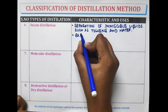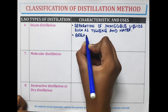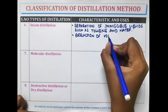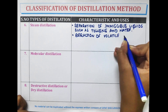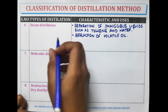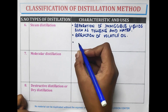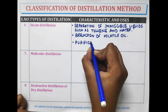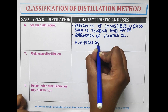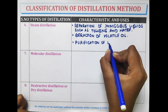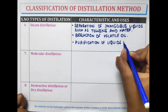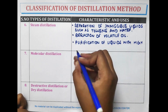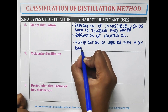Steam distillation is also used for the extraction of volatile oils, and for the purification of liquids with a high boiling point.